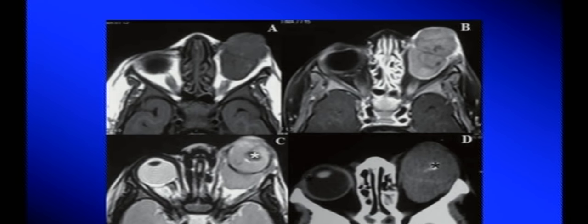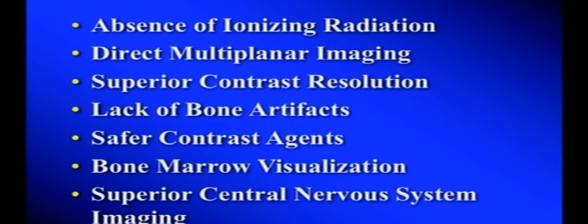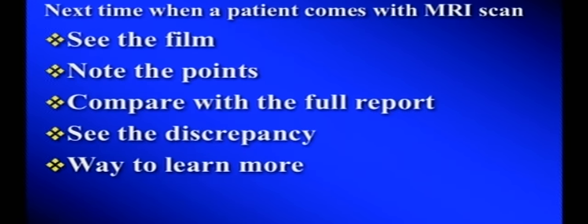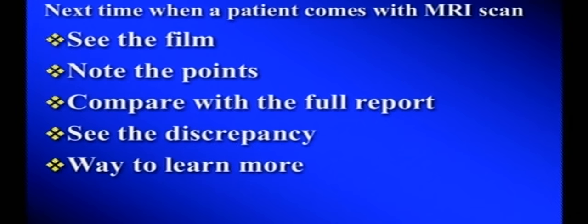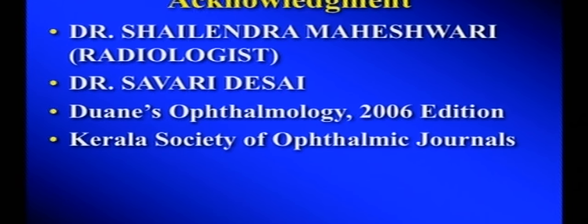On CT, myositis shows the entire muscle including the tendon insertion is affected; in thyroid-associated Graves' orbitopathy, only the muscle belly is involved and the tendon is spared. A blowout fracture of the floor — without the orbital rim — is also well demonstrated on CT. The practical lesson: when the next patient comes with an MRI film, don't do drama. Put the film on the viewbox, note your observations, and then read the full radiologist's report to see discrepancies. Sometimes the radiologist may have missed something too — this is how to learn.